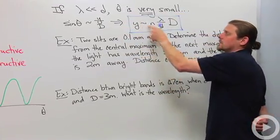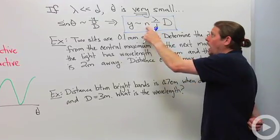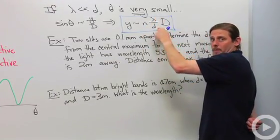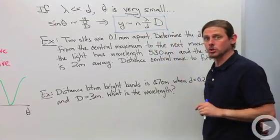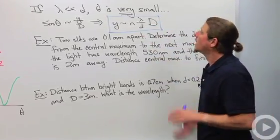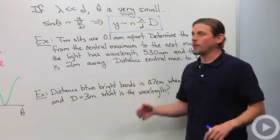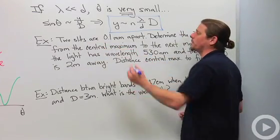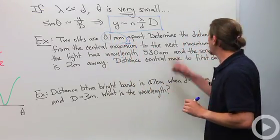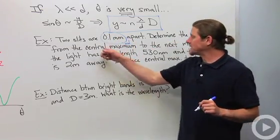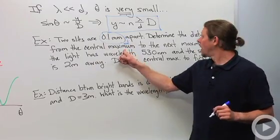So then that allows us to write y is approximately an integer multiple of the wavelength divided by the distance between the two slits times the distance to the screen. Let's go ahead and look at this example. We've got two slits, they're 0.1 millimeters apart, so that's lowercase d.